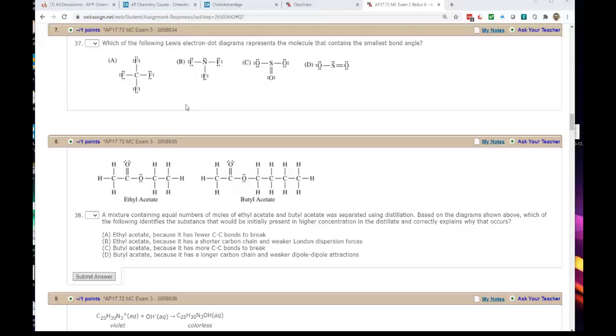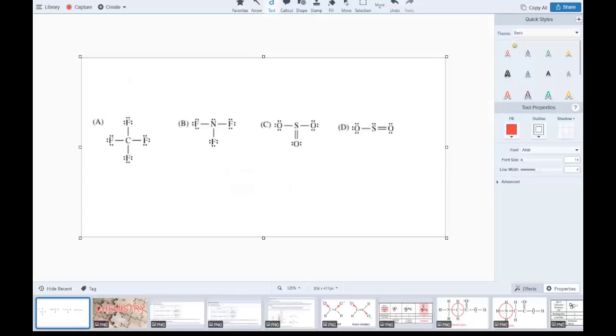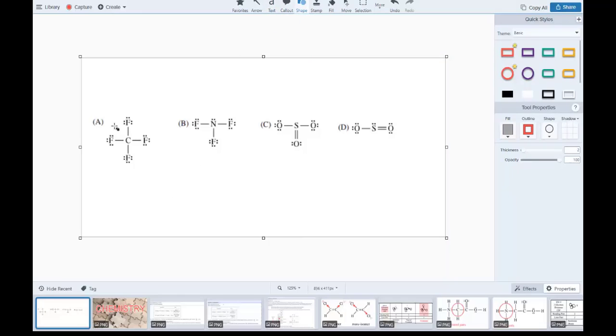I'm going to use this as an opportunity to go over how to find the shape from a Lewis dot diagram. The way we find the shapes and bond angles for molecules using the valence shell electron pair repulsion model is to look at the central atom and count the number of sigma bonds around the atom we're looking for the geometry of.